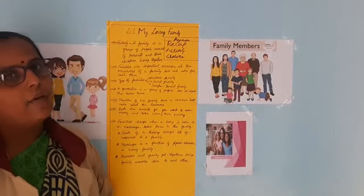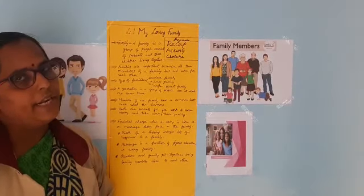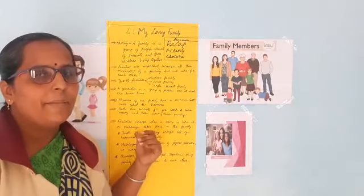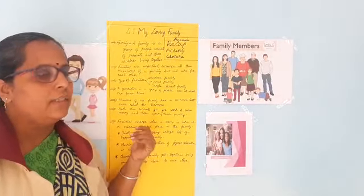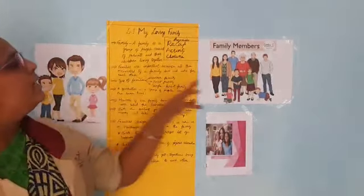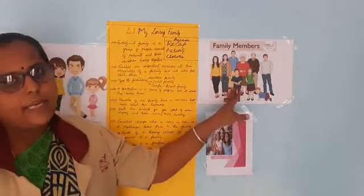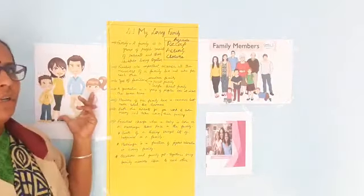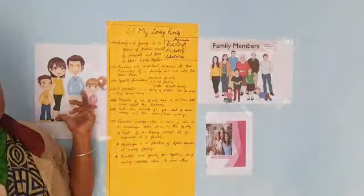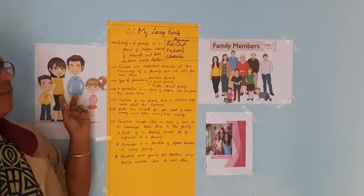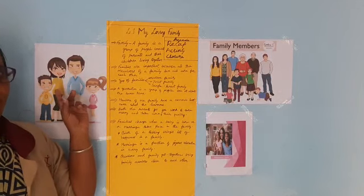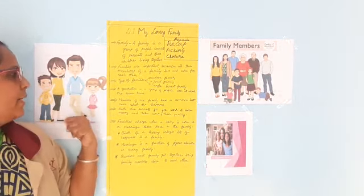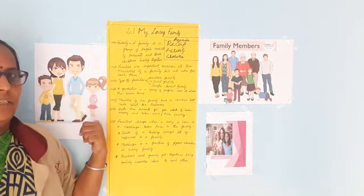We have also learnt different types of families. What are the different types of families we have learnt? Nuclear family, joint family, and a single parent family. Who are the members living in a nuclear family? Nuclear family consists of parents — that is father, mother, brother, and sister.